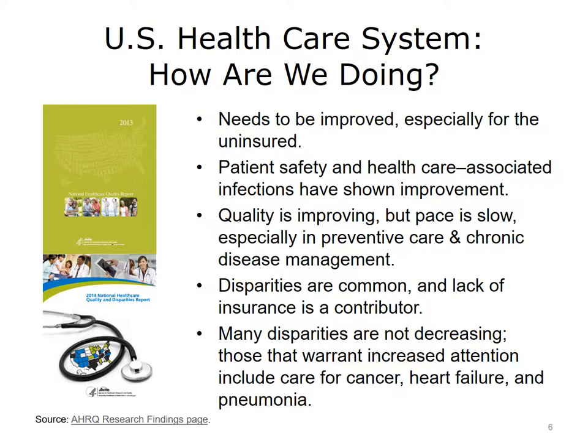The latest versions of these reports can be found on the AHRQ website. Some important conclusions include: access needs to be improved, especially for the uninsured; patient safety and health care-associated infections have shown improvement; quality is improving but the pace is slow, especially in preventive care and chronic disease management; disparities are common and lack of insurance is a contributor; many disparities are not decreasing, and those that warrant increased attention include care for cancer, heart failure, and pneumonia.